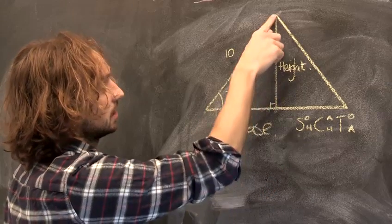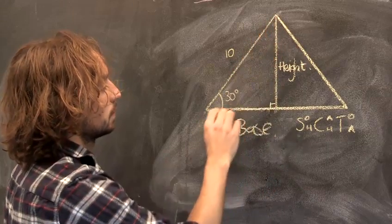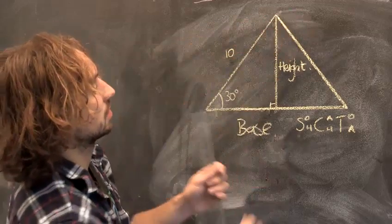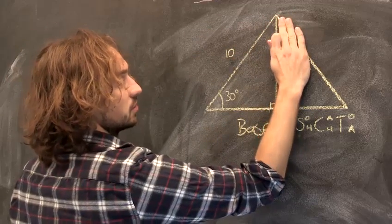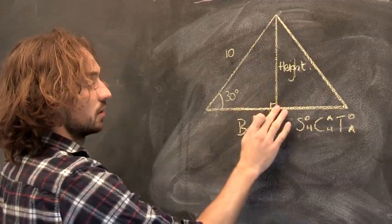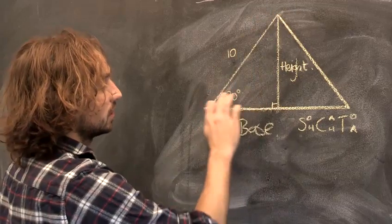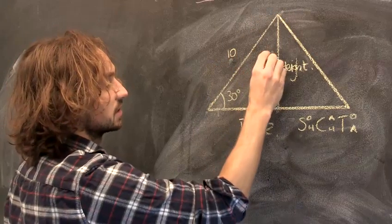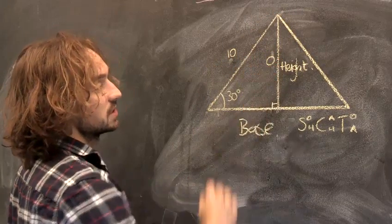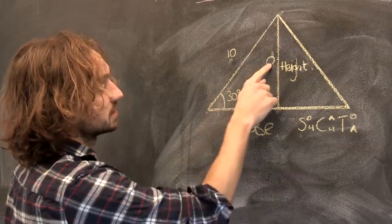So this length here, this height of the triangle. If you consider this triangle here, ignore this half here, just consider this right angle triangle here. And we know this length here, and we want to find this length. Let's call it O, the opposite length. This is opposite the angle.